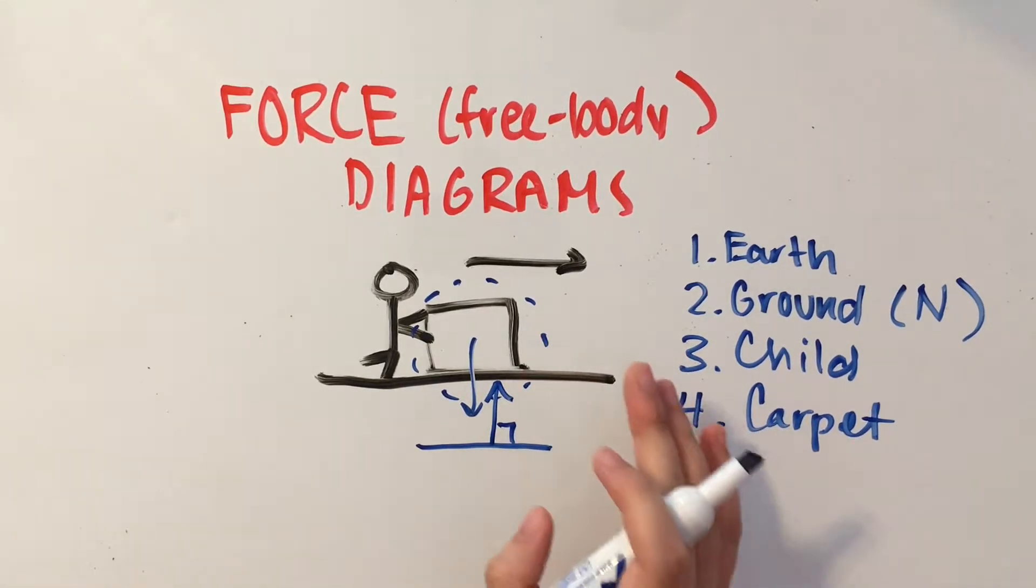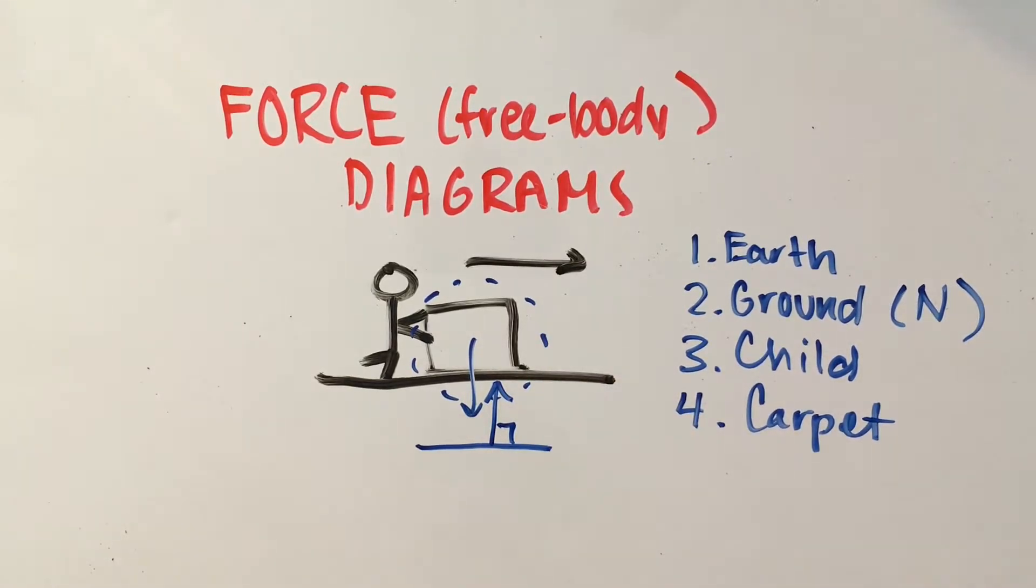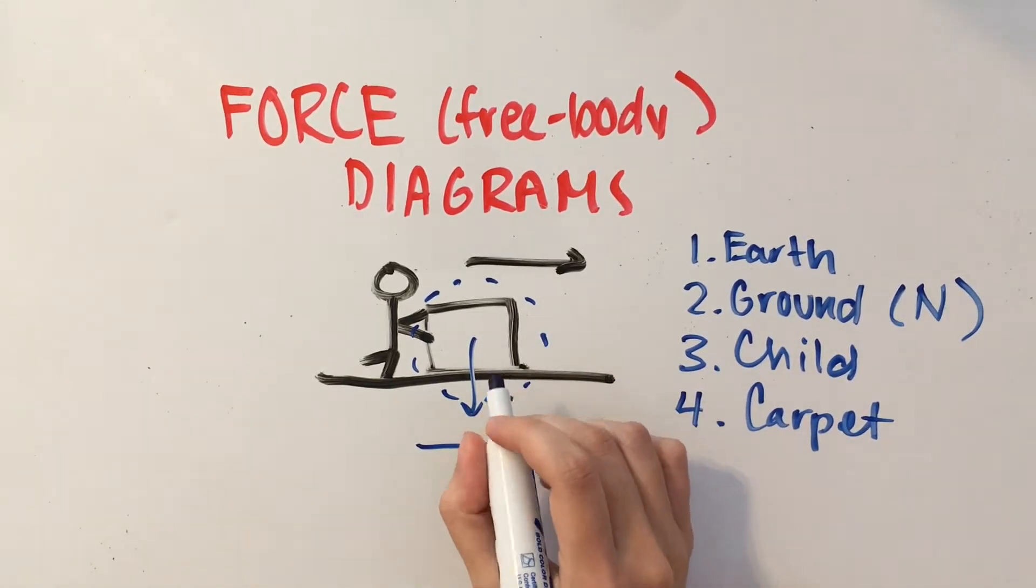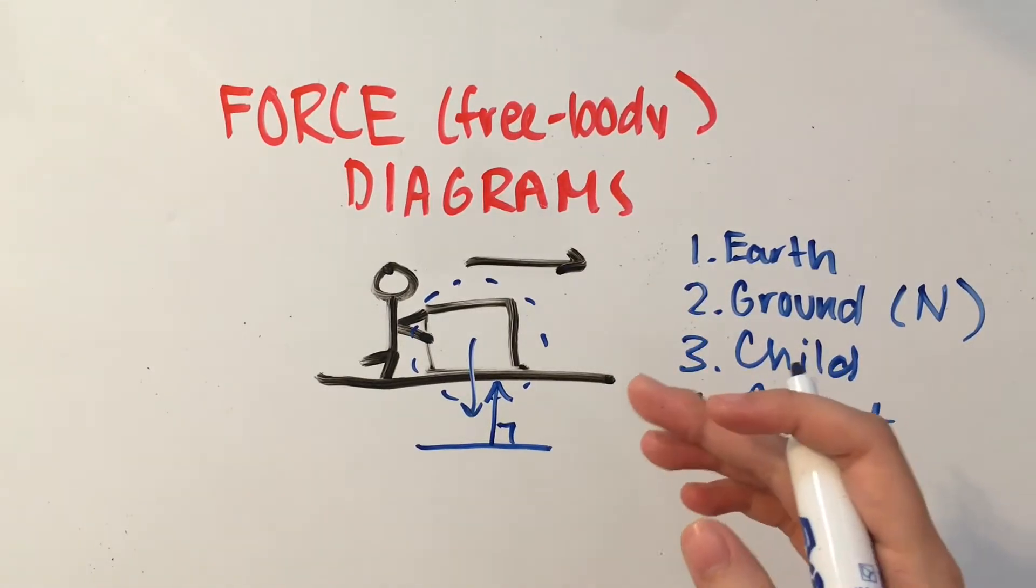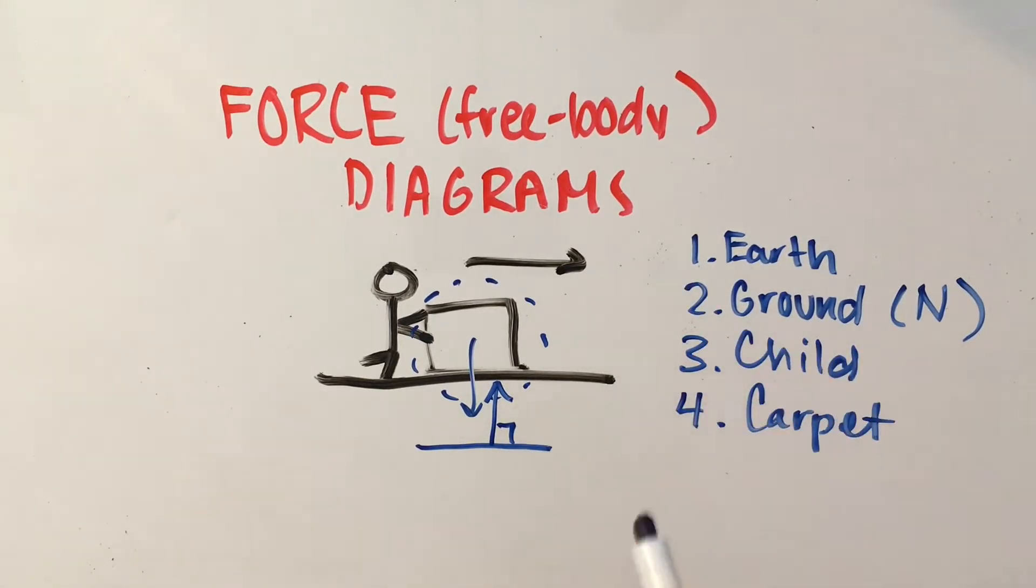Our forces need to be balanced because it will only stop moving if there is an unbalanced force acting upon it. The fact that it's moving at a constant velocity basically tells us that the forces must all be balanced.